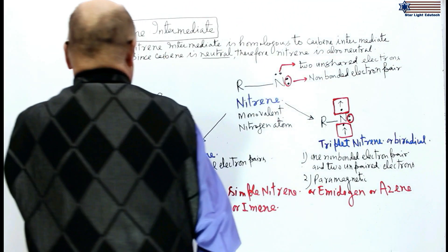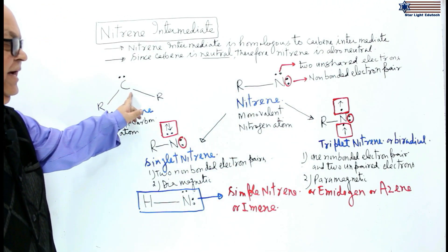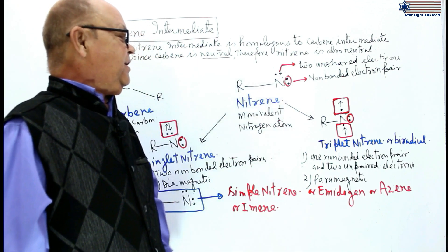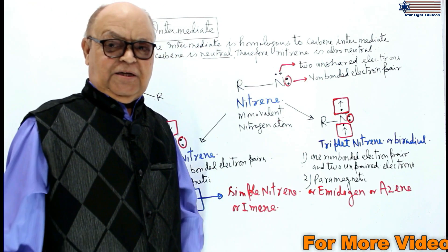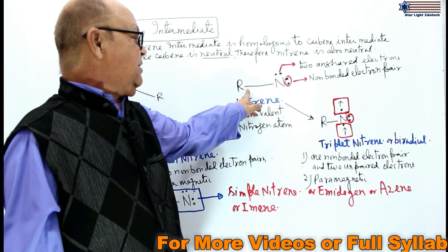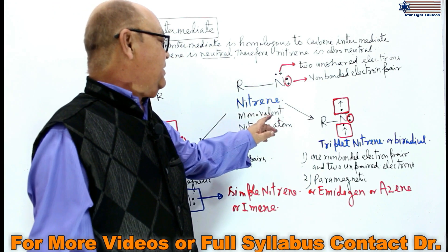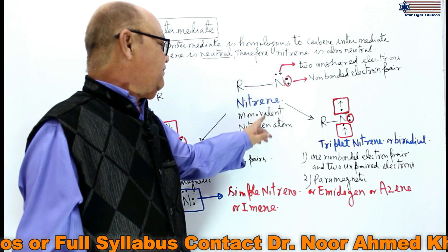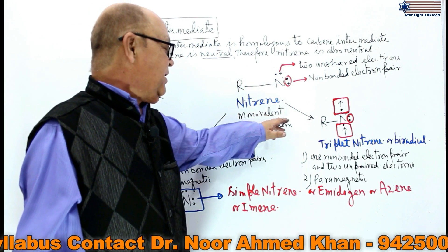If this carbon is replaced by nitrogen in carbene, then we get another intermediate called nitrene intermediate. In nitrene intermediate, there are five electrons in the outermost orbit of nitrogen, in which only one electron is shared forming an N-R sigma covalent bond. Therefore, the covalency of nitrogen is one, and in nitrene intermediate there is a monovalent nitrogen.